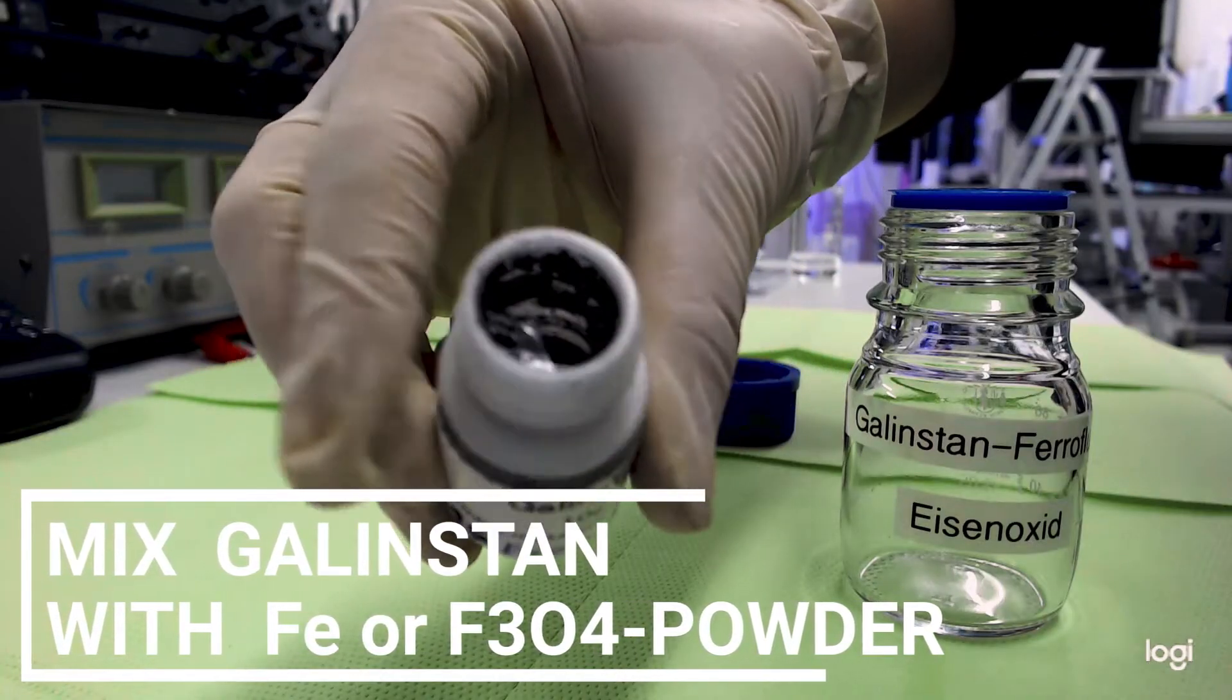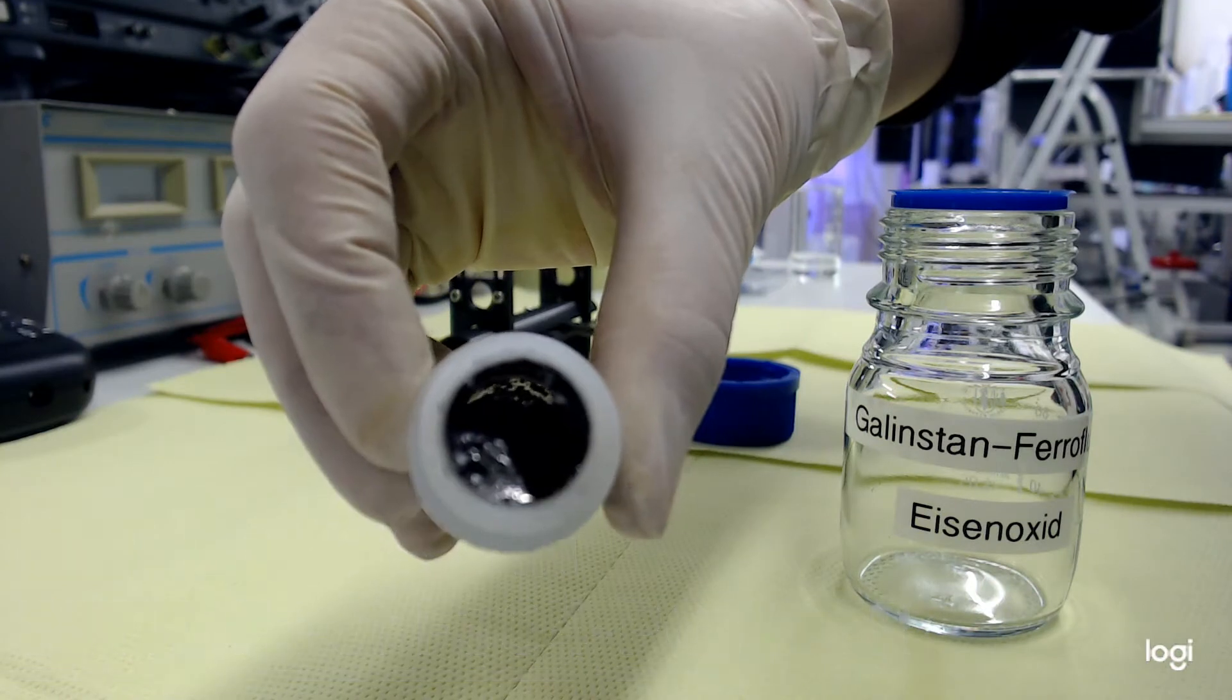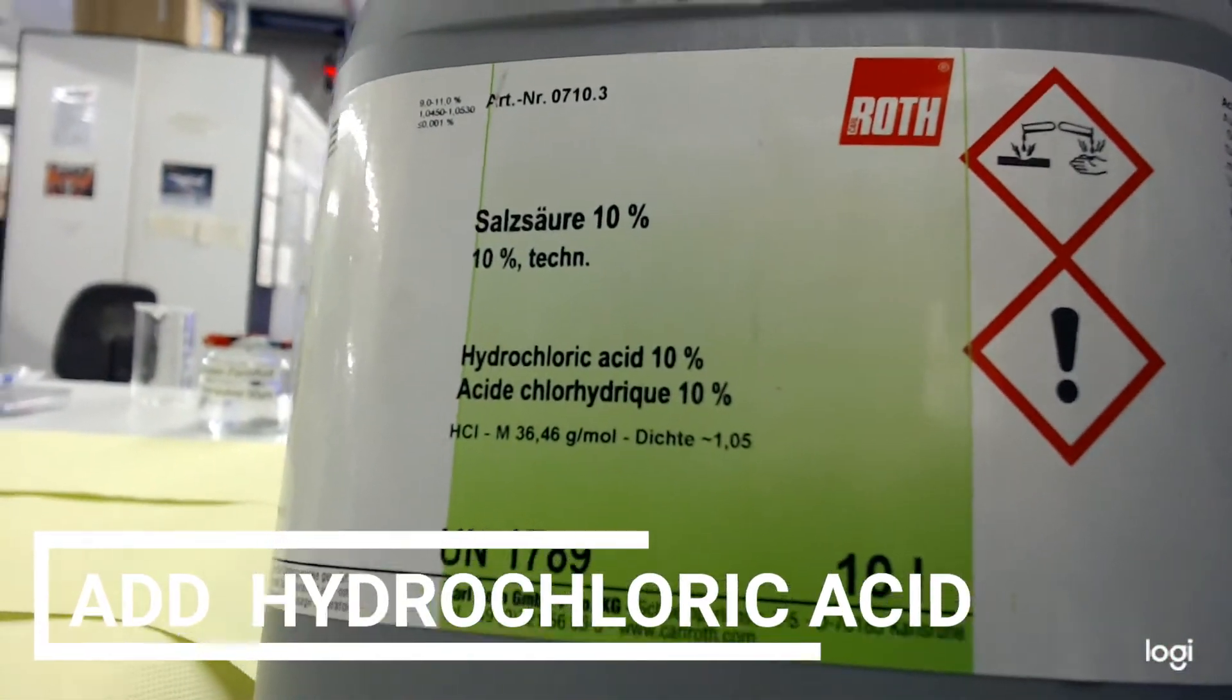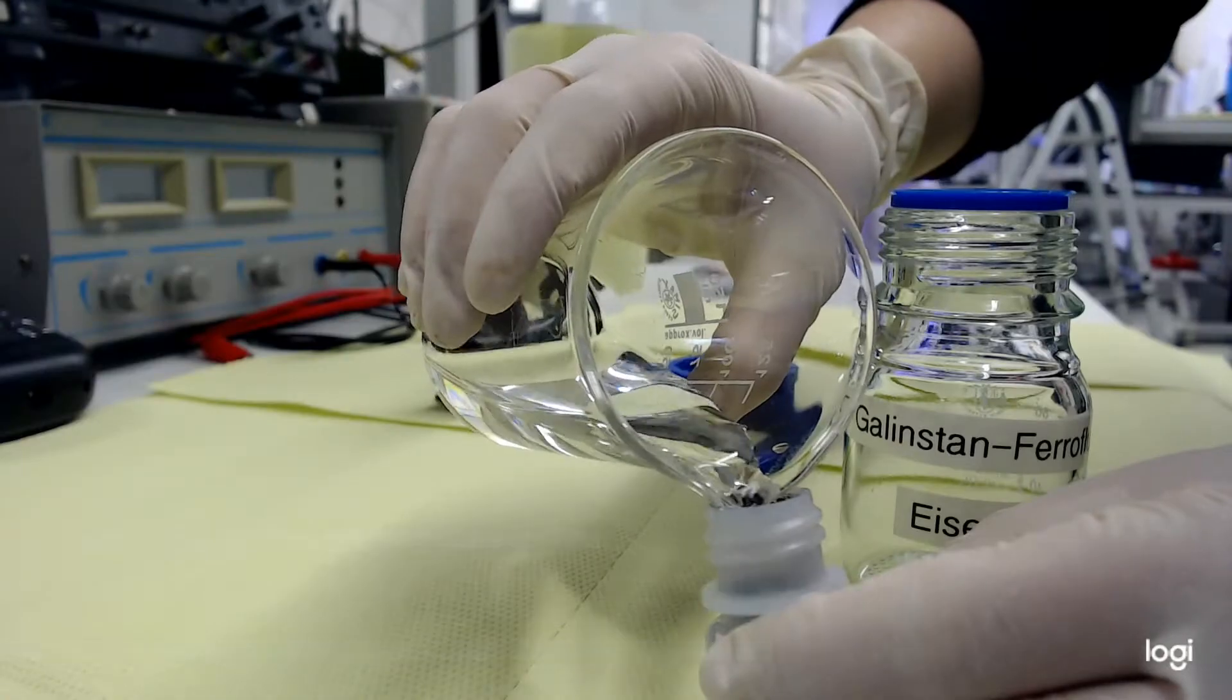To mix the powders, hydrochloric acid has to be used according to literature. We use 10% strength hydrochloric acid in solution.